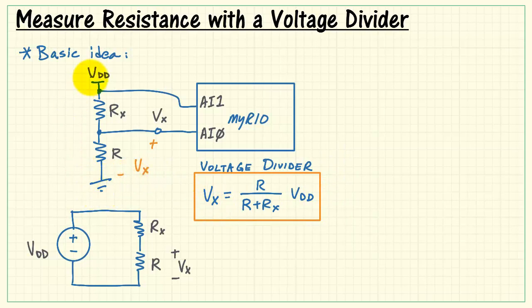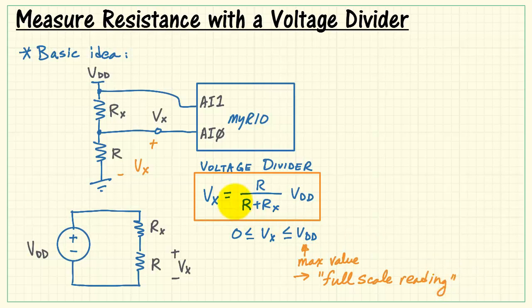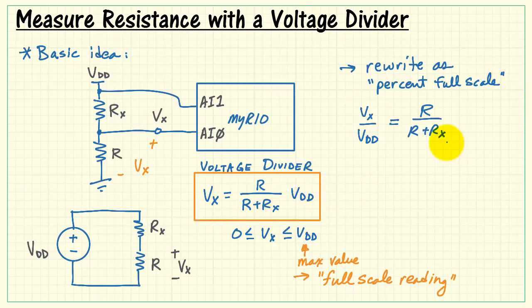Now Vx will range anywhere from zero up to VDD. Whenever Vx reaches VDD, it's at its maximum value, and we can call this 100% of a full-scale reading. For this reason, it will be easier to recast this equation in terms of percent full-scale. I'll do that by dividing both sides of the equation by VDD. Now I have a dimensionless ratio of two resistances.